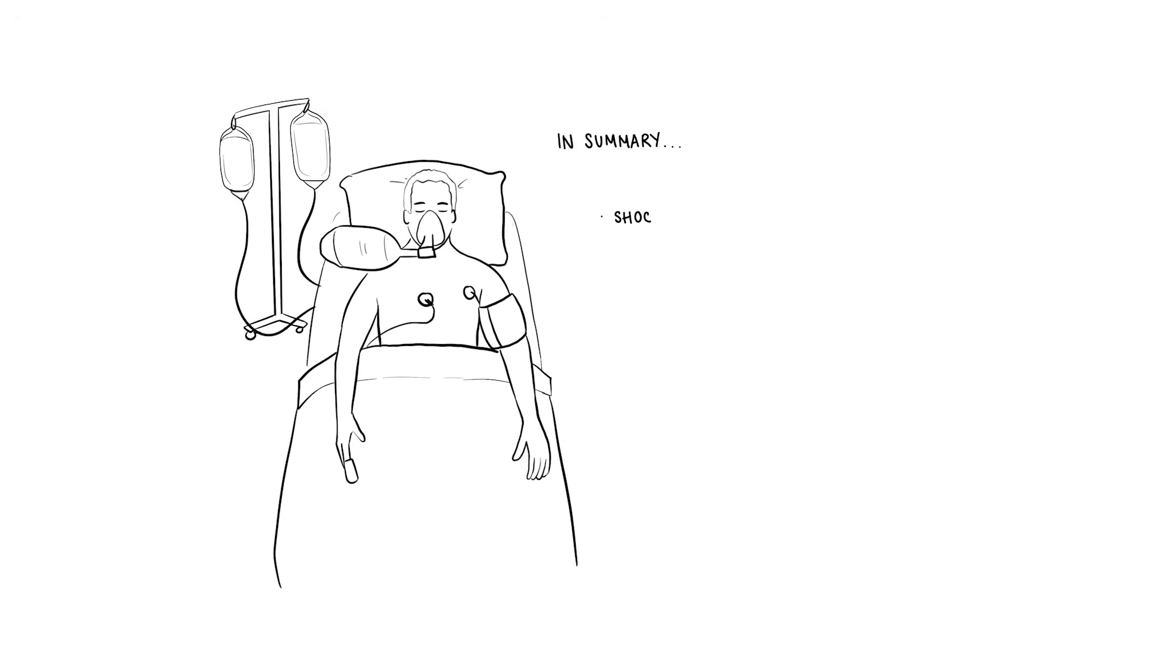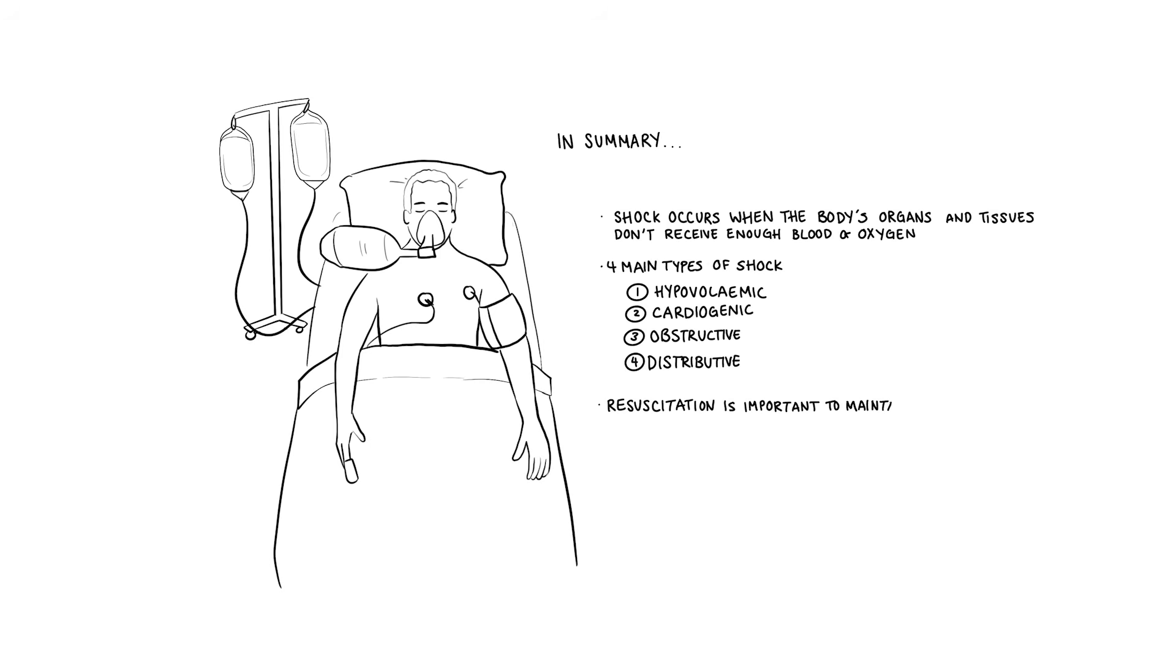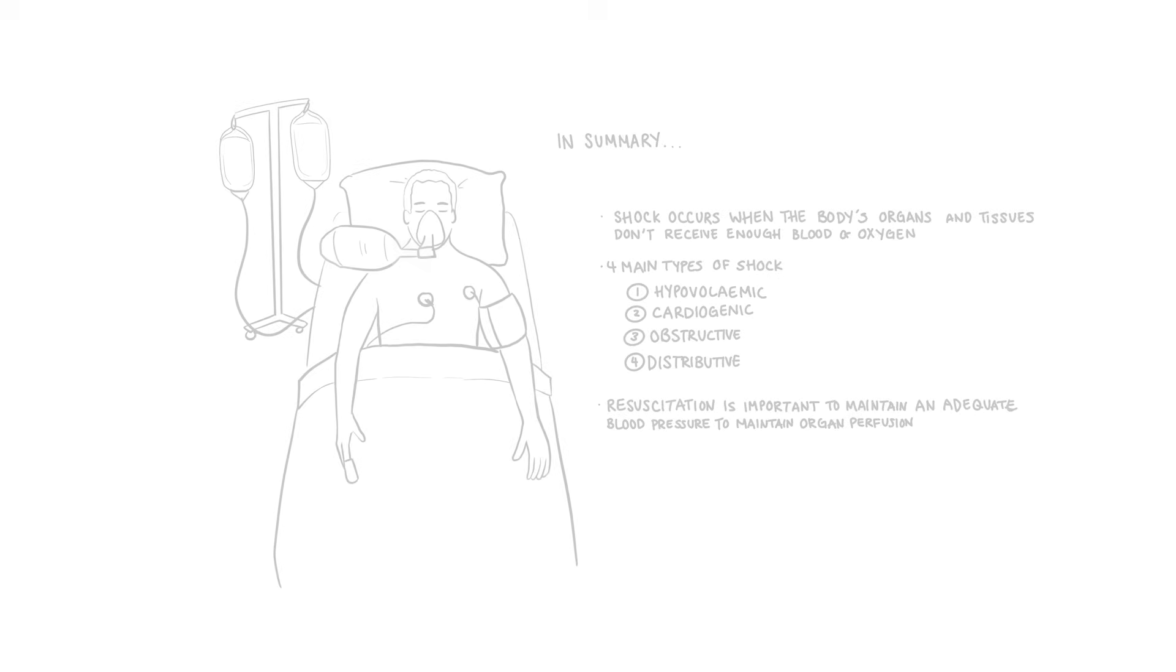In summary, shock occurs when the body's organs and tissues don't receive enough blood and oxygen. There are 4 main types of shock: hypovolemic shock, cardiogenic shock, obstructive shock and distributive shock. Resuscitation is important to maintain an adequate blood pressure to maintain organ perfusion. Thank you for watching.